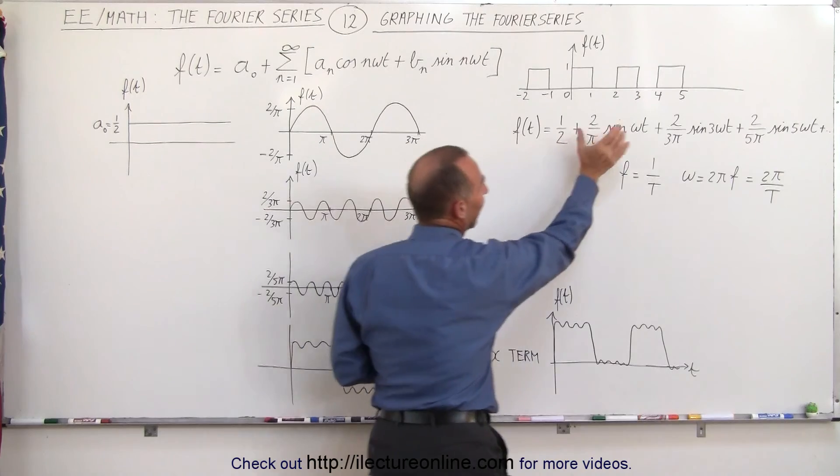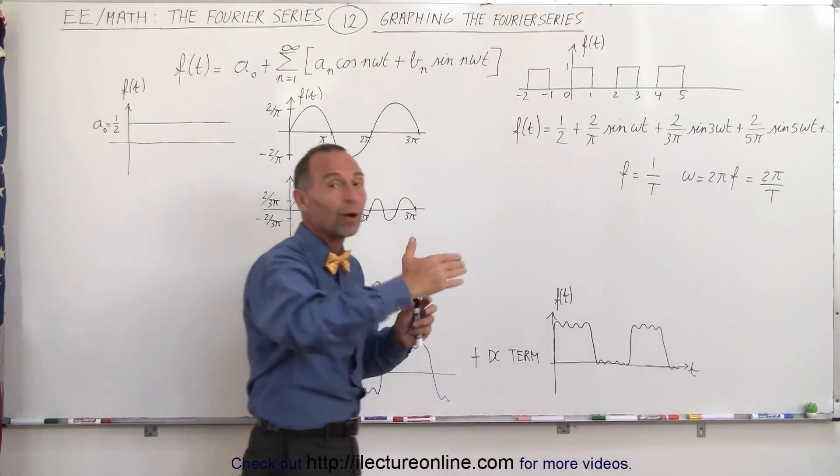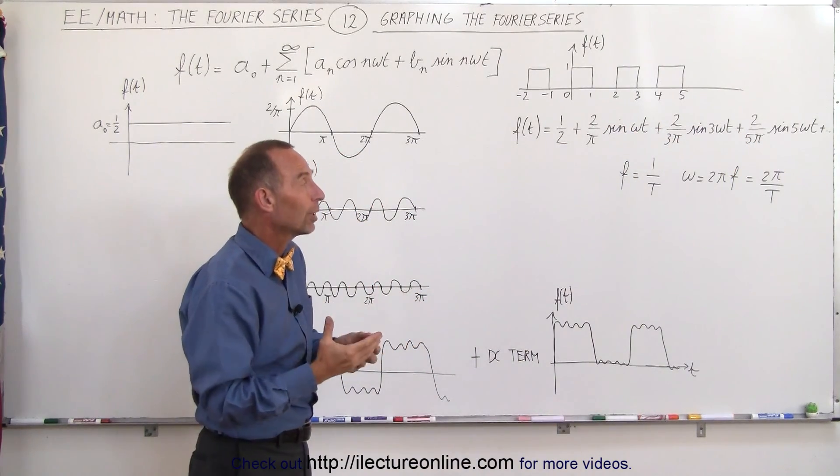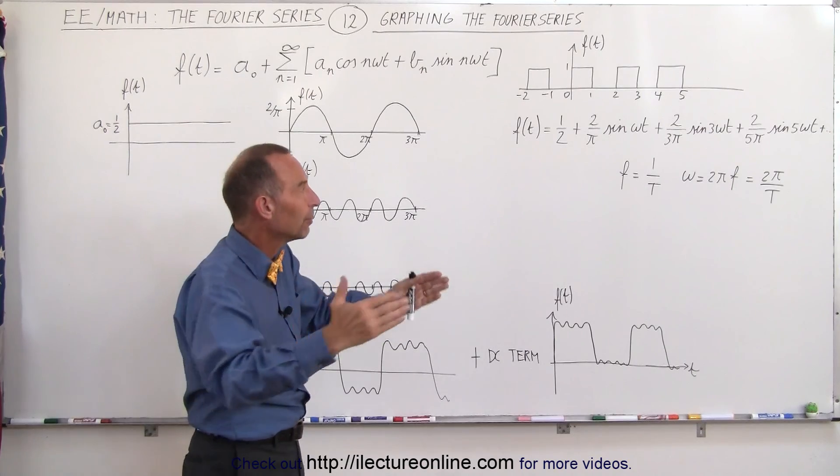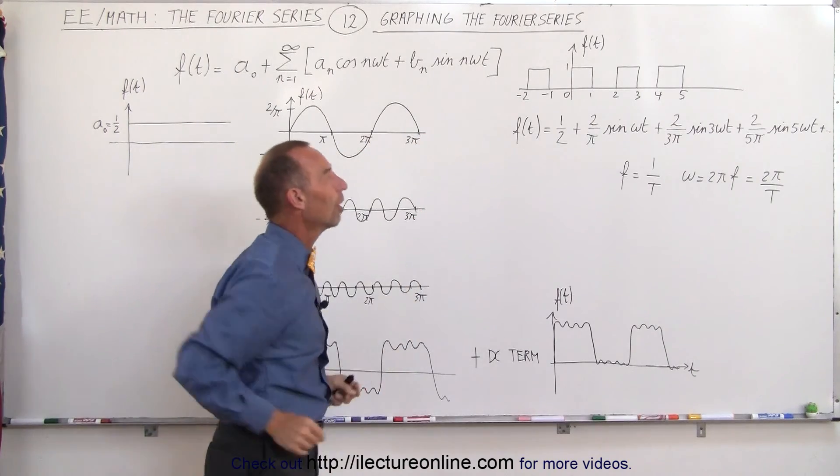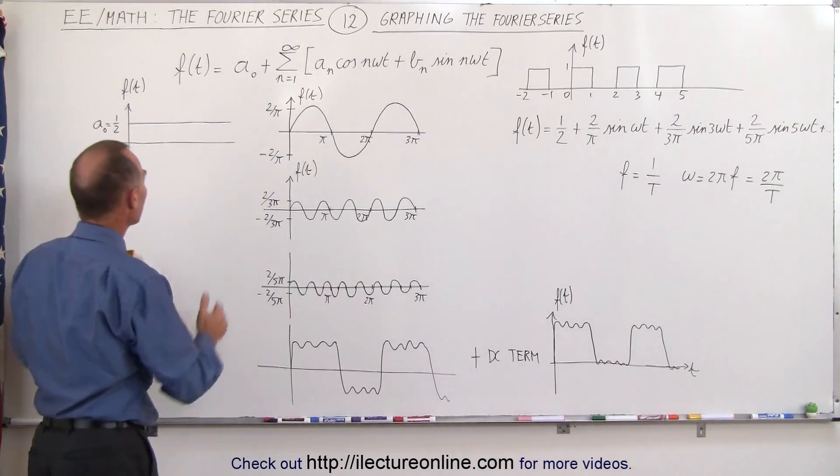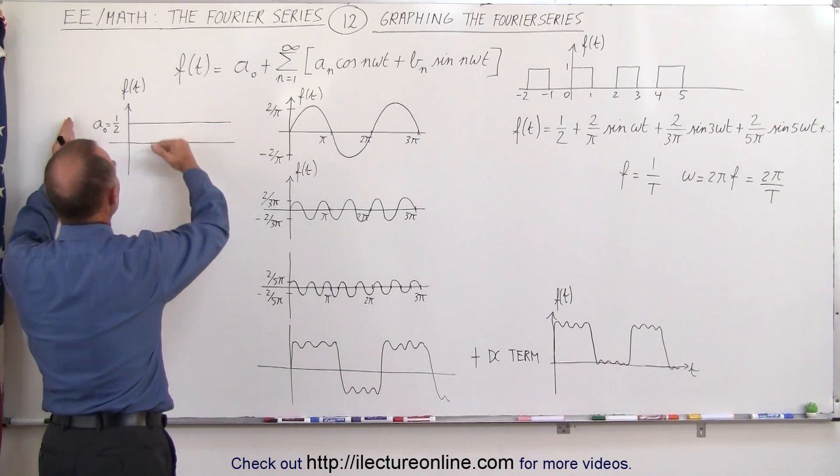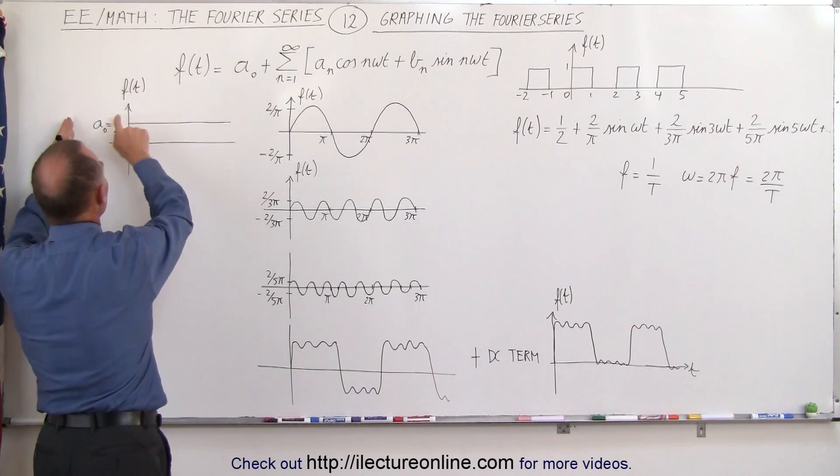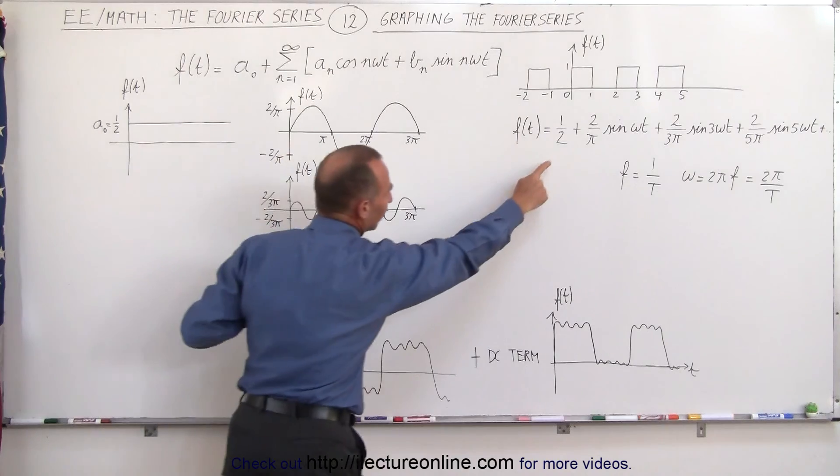We have the DC portion and then the various AC portions that go on to infinity but we have to realize that we only need a certain number of them to have a good representation of the original function. So we have the DC portion right here where the amplitude is equal to one-half, a sub-naught was equal to one-half, that's what we have over here.